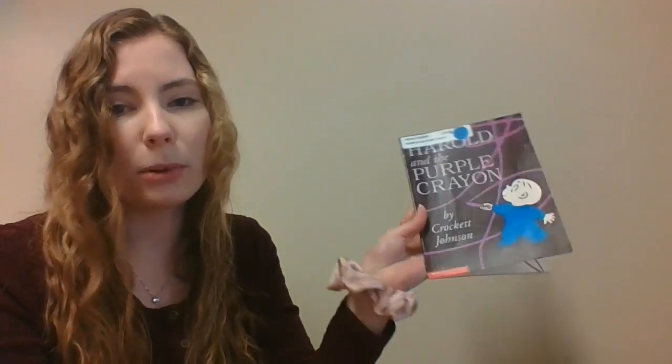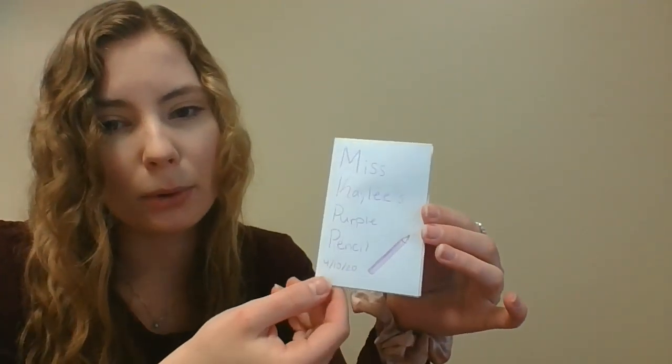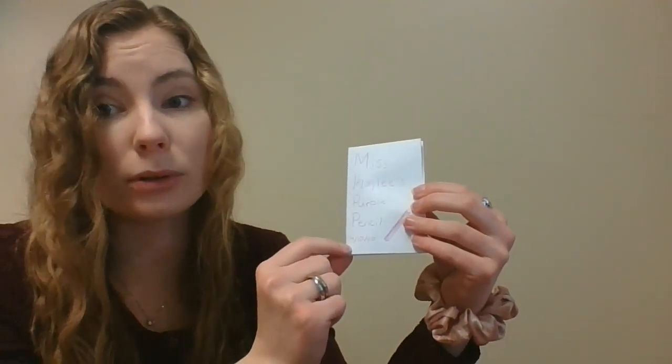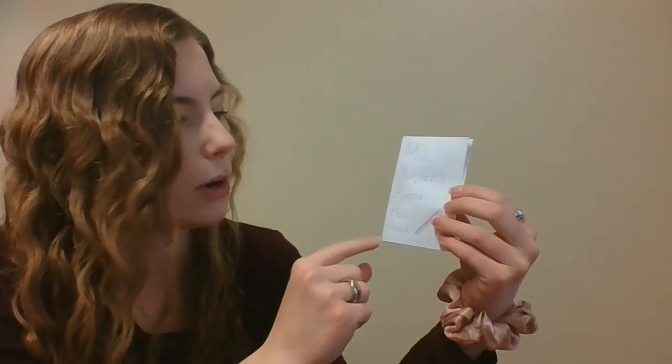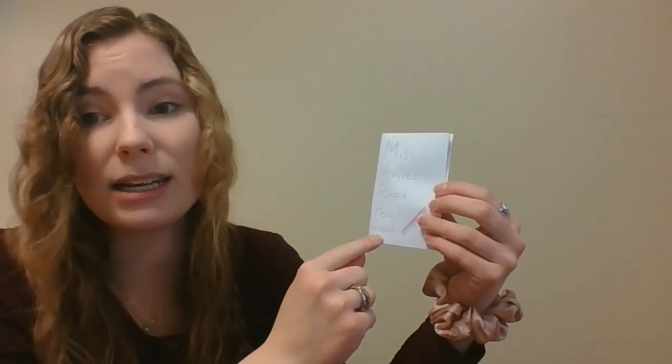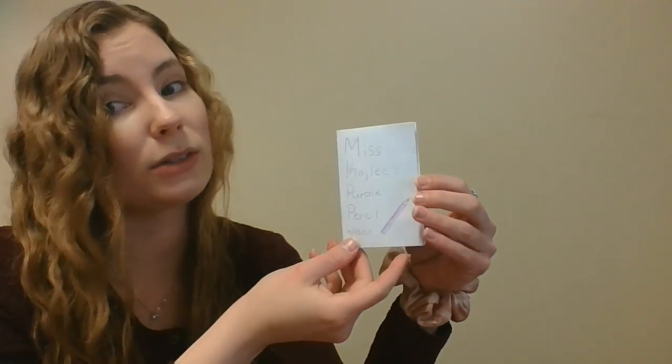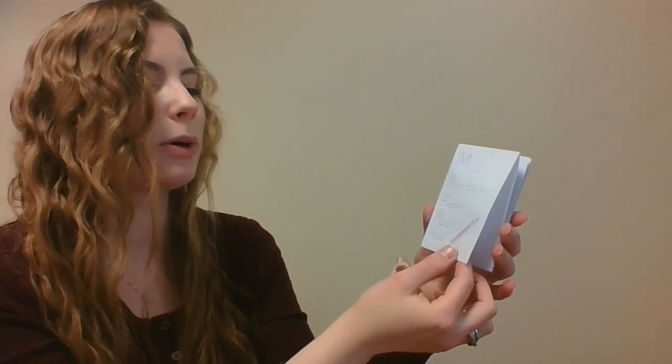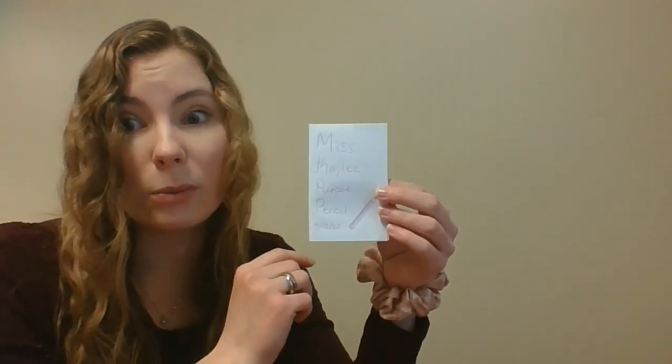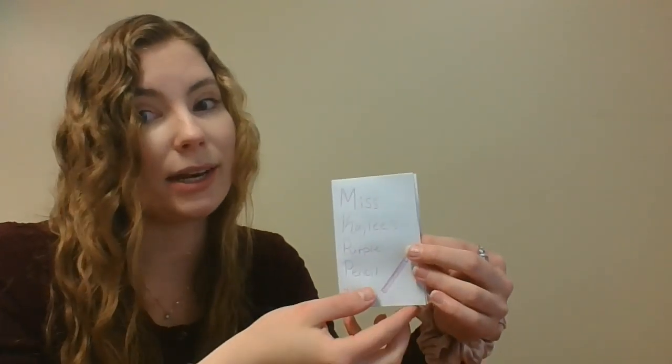I made my own story kind of like Harold and the Purple Crayon story. Except mine is called Miss Kaylee's Purple Pencil. And I wrote the date. I made it. It's April 10th, 2020. So I wrote 4, 10, 20. Because 4 means April. 10 is the number day it is in April. And 20 is the year it is, 2020. Miss Kaylee's purple pencil. I'm going to go through it one time. And we're just going to look at the pictures, trying to think what the story could be about. And then I'll tell you the story.